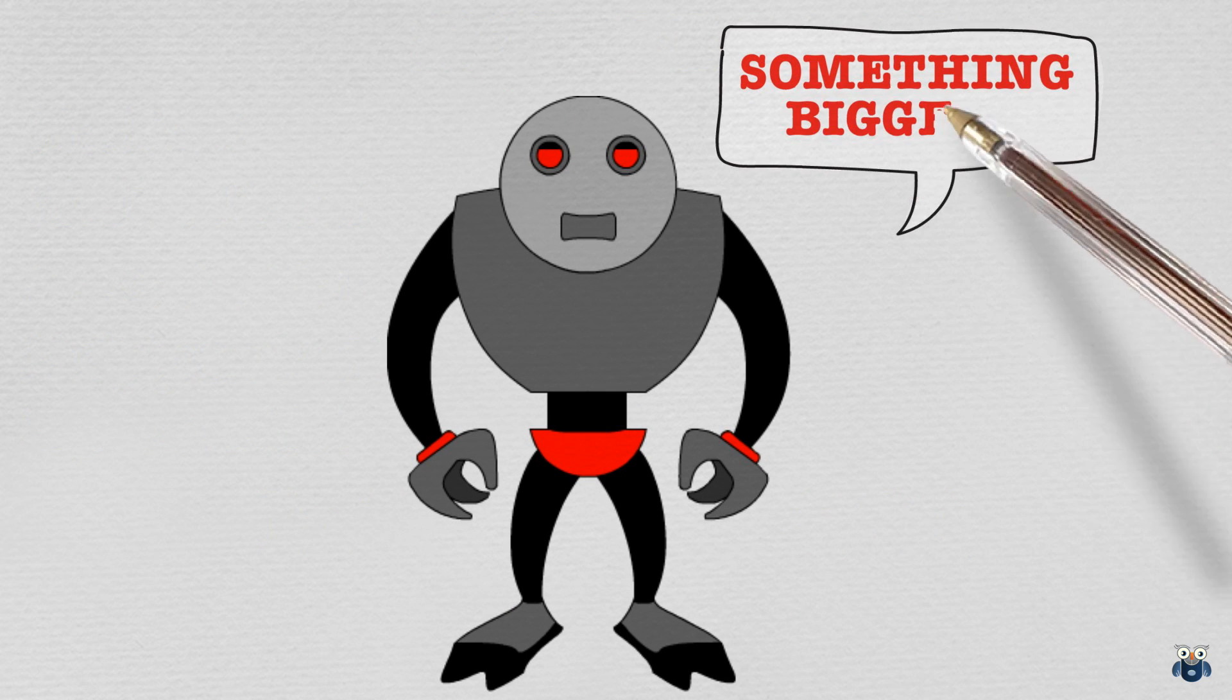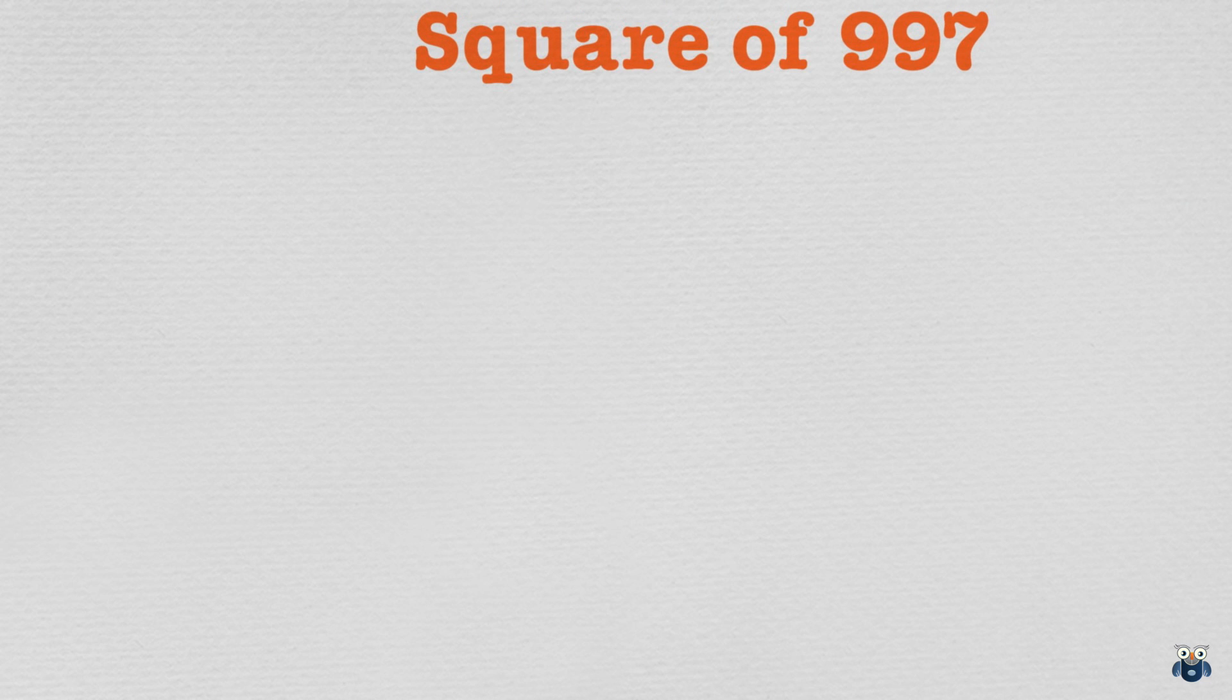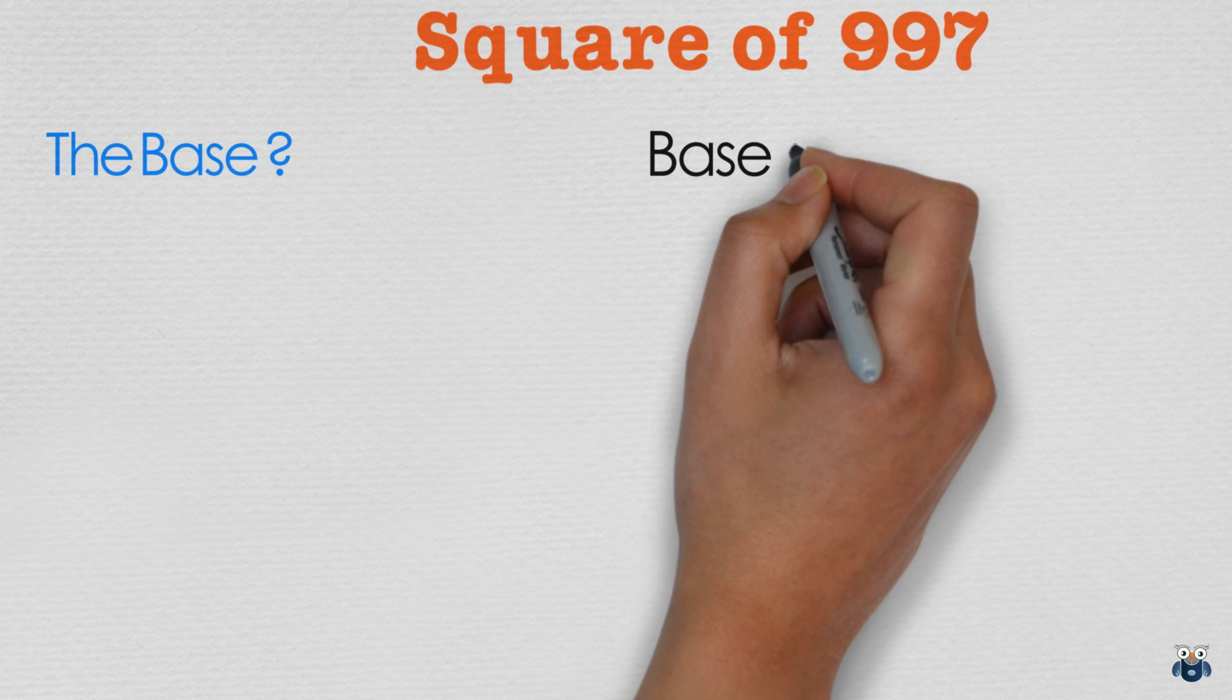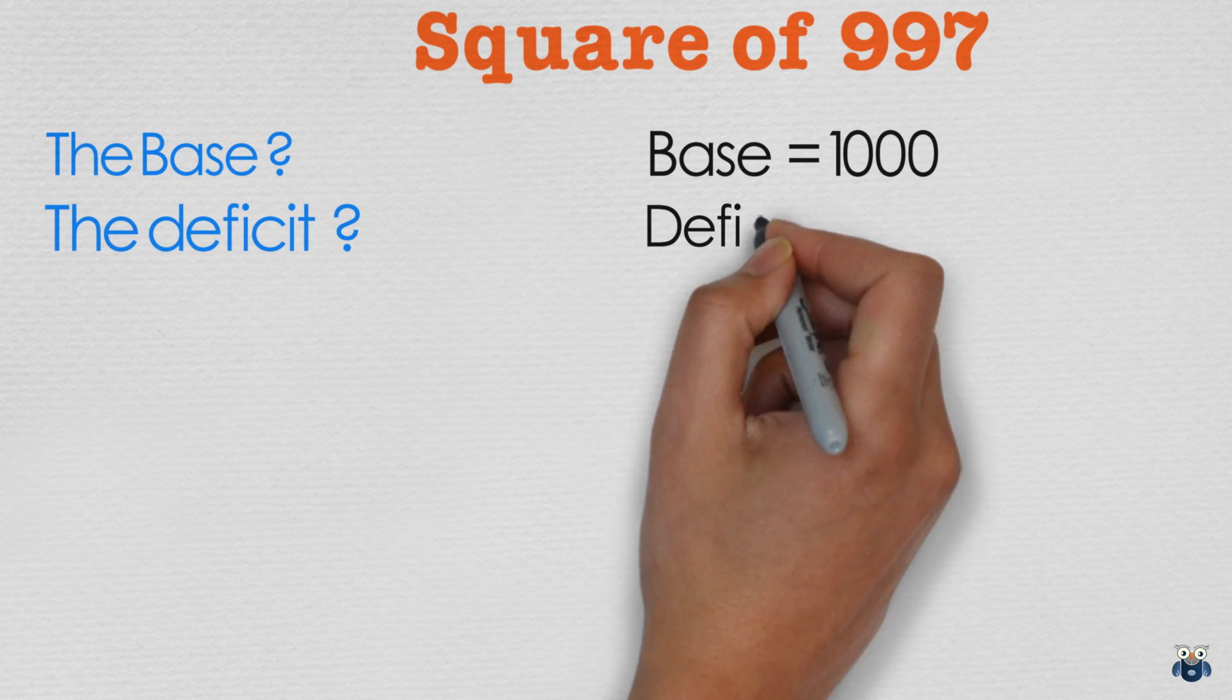Now that you have grasped the concepts, let's try squaring a bigger number. What's the square of 997? So then what's our base? 1000? Yes, I would agree. What's the deficit? It's 3 right?